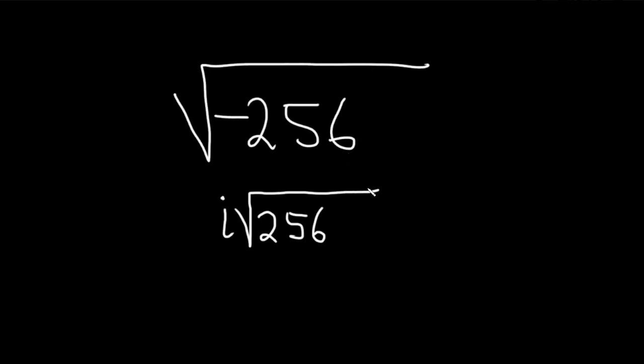Now, the square root of 256 is 16. So this is equal to i times 16. But i times 16, no one really puts the i in the front. So this is really 16i. And that would be the answer.